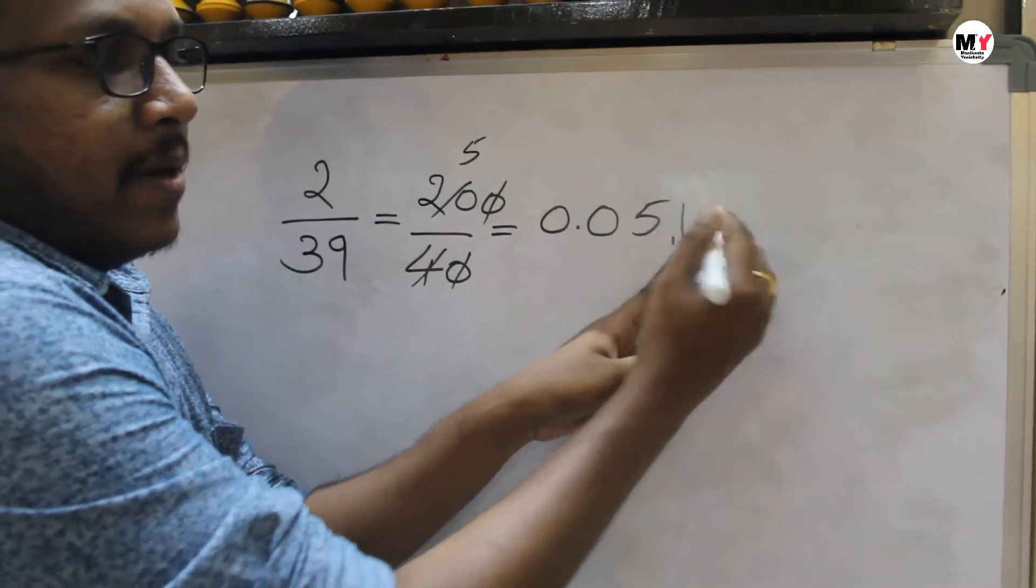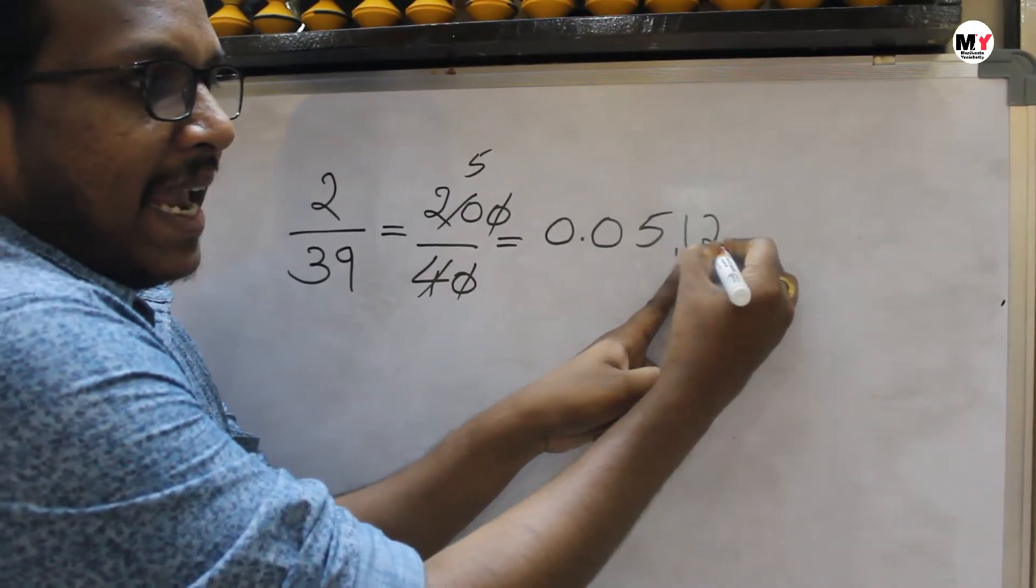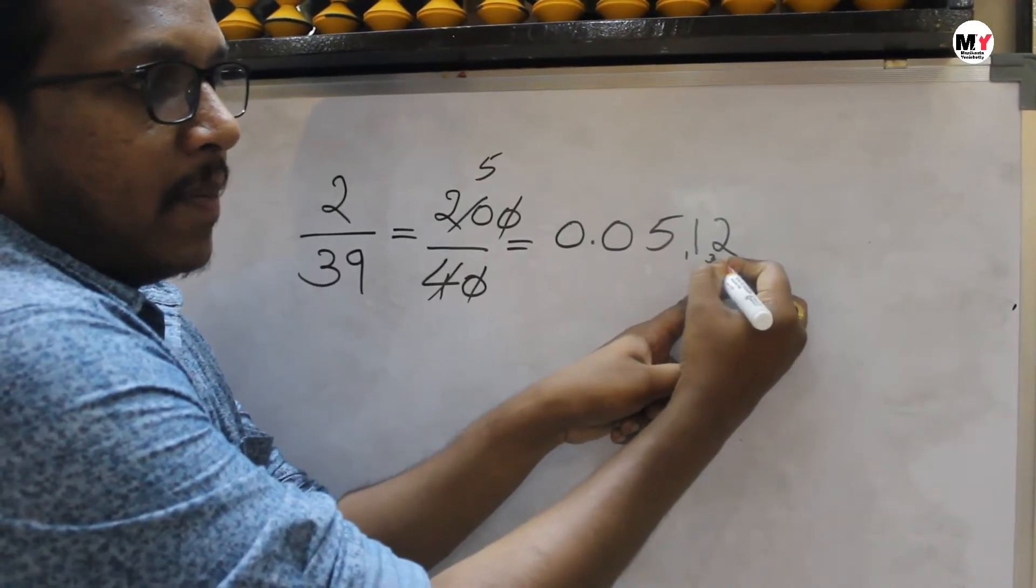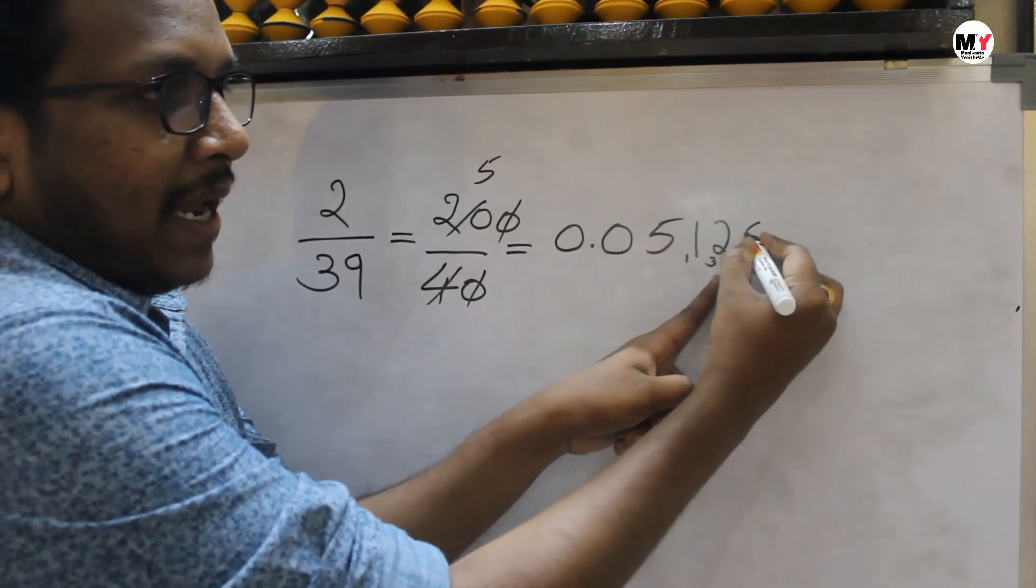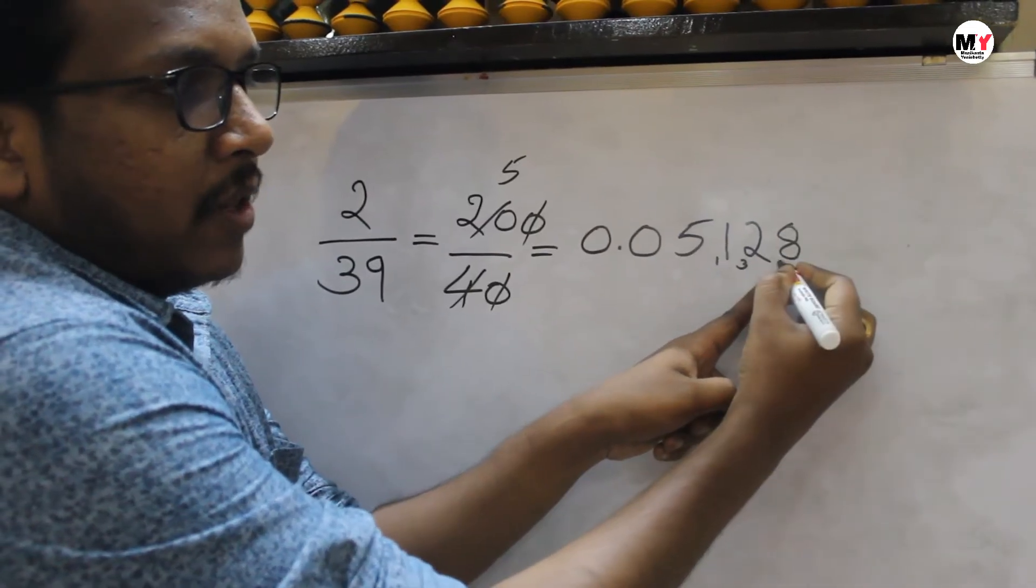Now the number became 11. 4, 2's are 8, reminder became 3. The number became now 32. 4, 8's are 32. Now there is no reminder, 0.